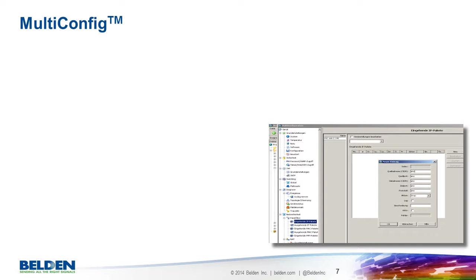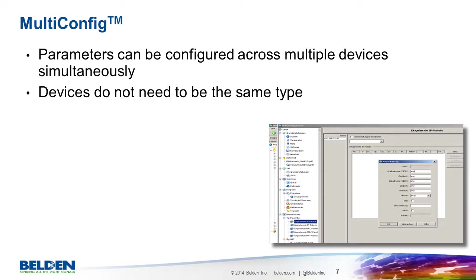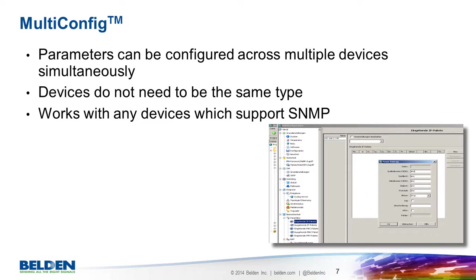Multi-config is one of the most compelling features of Industrial HiVision — this is why we trademarked the name. The concept is simple: it allows multiple devices to be configured at the same time. It works if the devices are different models, and even if they use different operating systems. Multi-config works best with Hirschman devices, but it works on any devices which support standardized parameters such as MIB2 or SpanningTree. It dramatically reduces network deployment time, especially for large networks — imagine having to configure 50, 100, or more switches individually.